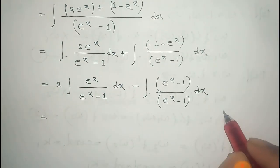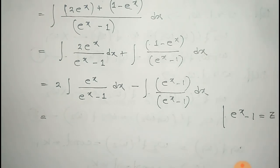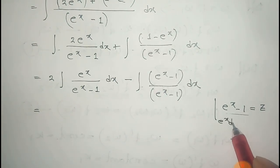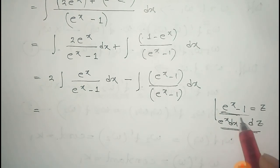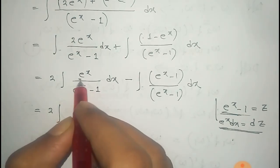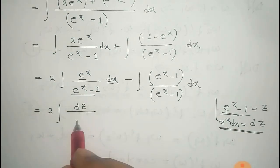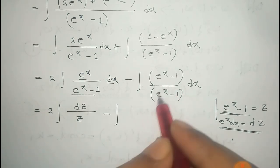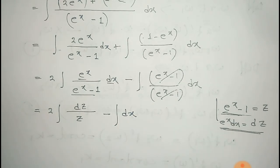To evaluate the first integral, we let e to the power x minus 1 equal z. Differentiating both sides gives e to the power x dx equal to dz. Substituting the value of e to the power x dx as dz and e to the power x minus 1 as z in the first integral: we get 2 times dz by z. The second term cancels out, leaving just dx.